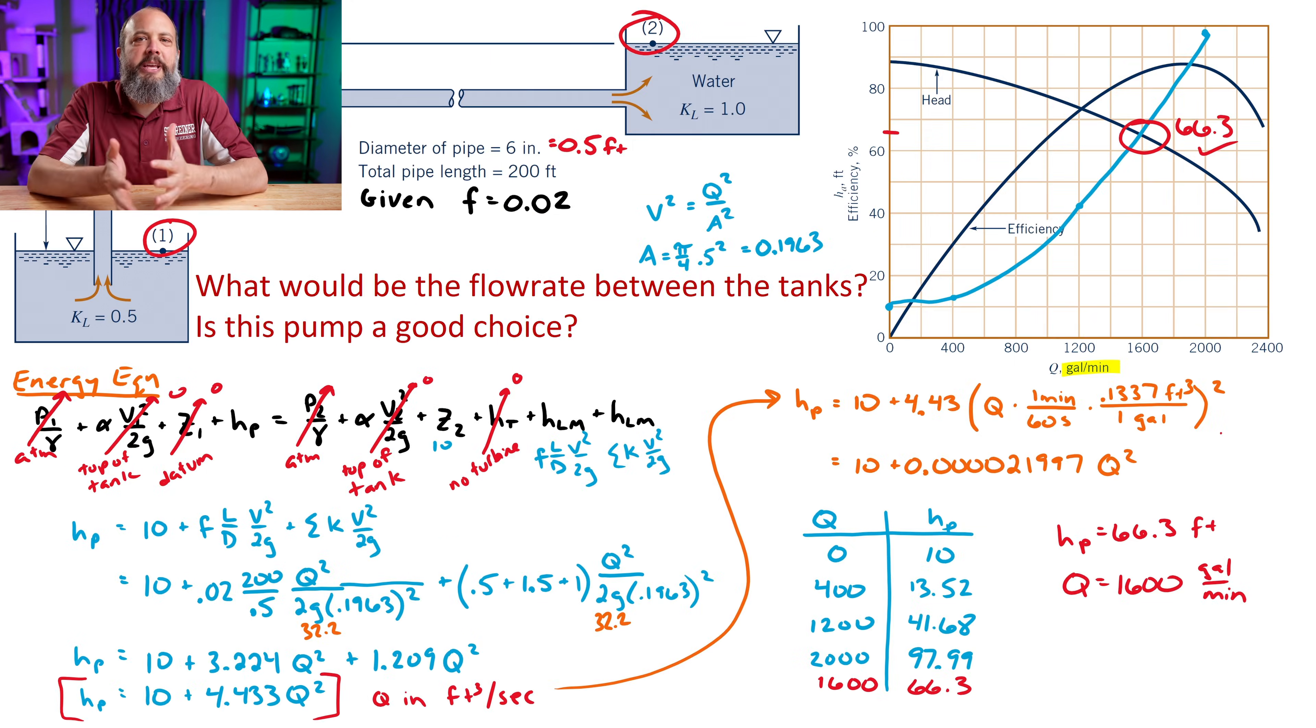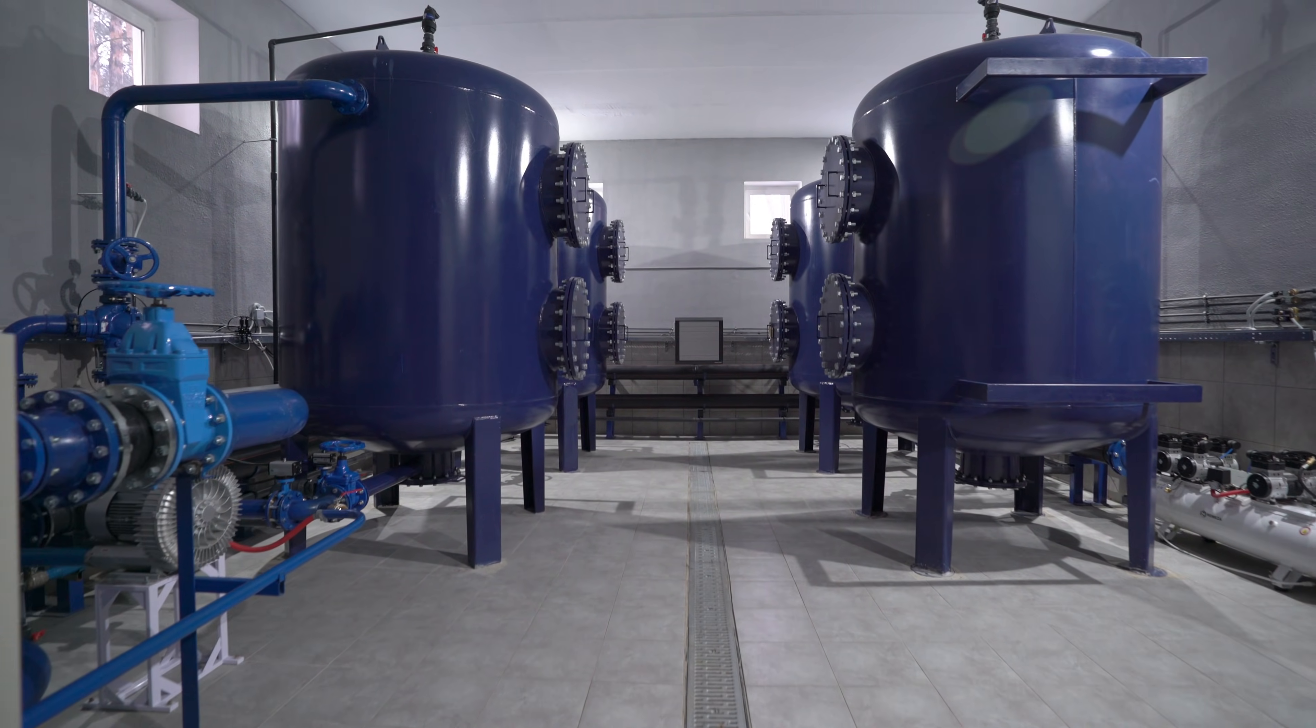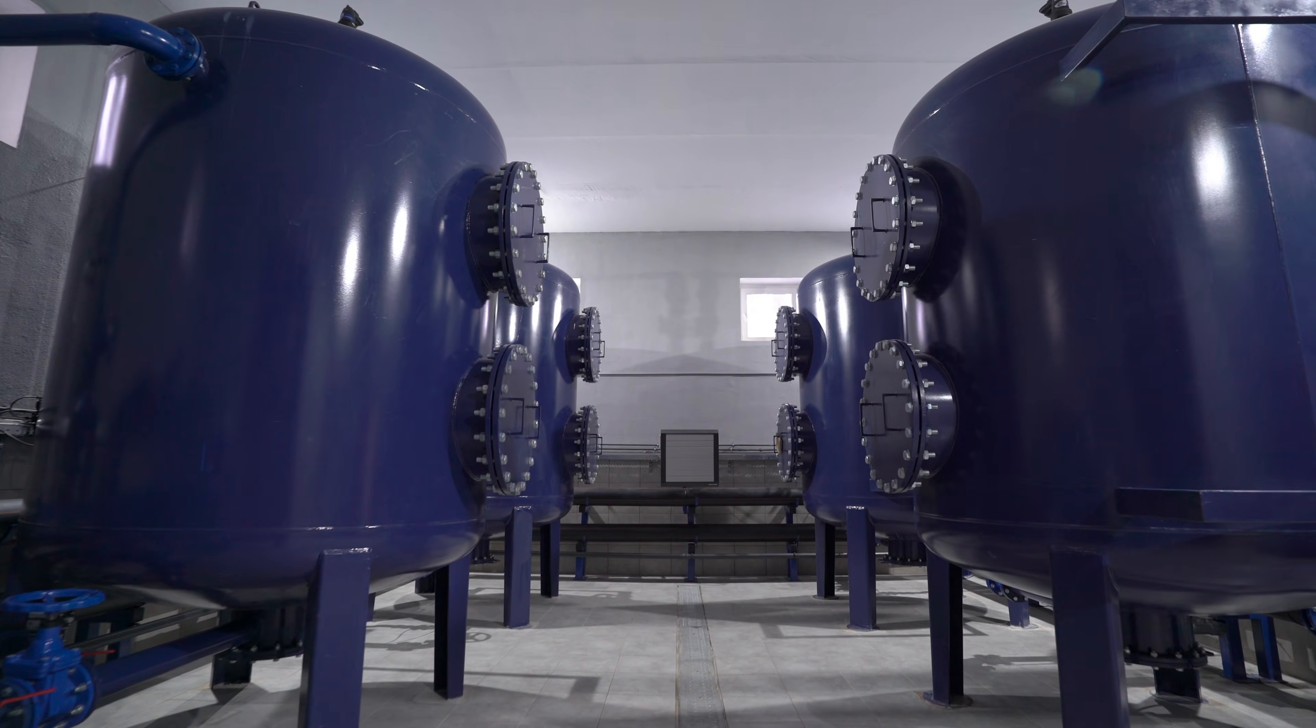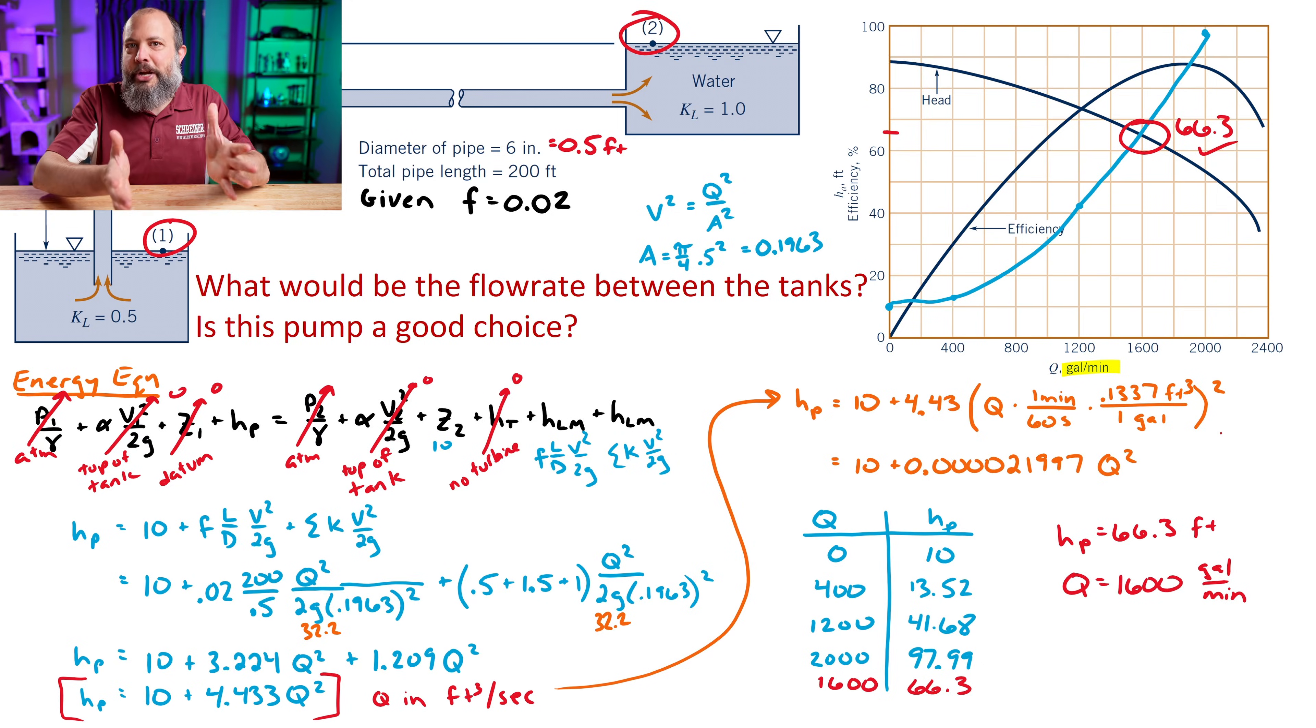So would this be a good choice of pump? Well, first thing is, is 1,600 gallons per minute fast enough? Like, is that enough flow rate for if we're pumping from tank to tank? Is that enough? It's one thing we don't know for this problem is whether 1,600 is actually going to work for the application. Like, are we time limited? Do we want to try to get this move from one tank to the other in a certain amount of time?